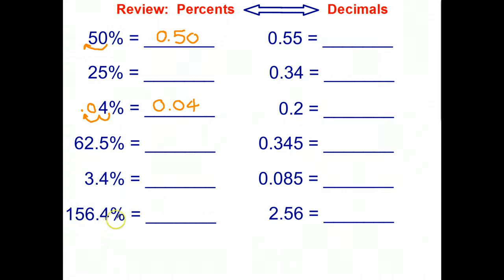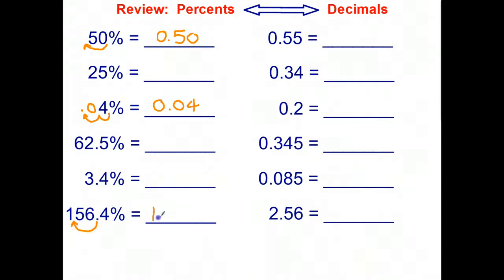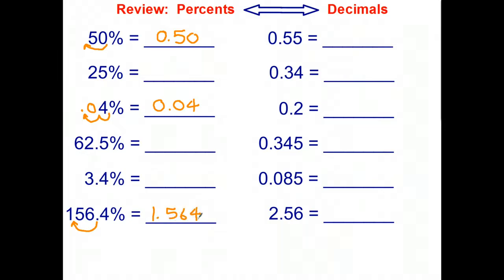If you've got a number that's bigger than 100 percent, that means it's going to be a number bigger than one when it's turned into a decimal. So in this case it's 1.564. Okay, stop the video and have a go at the remaining three questions.